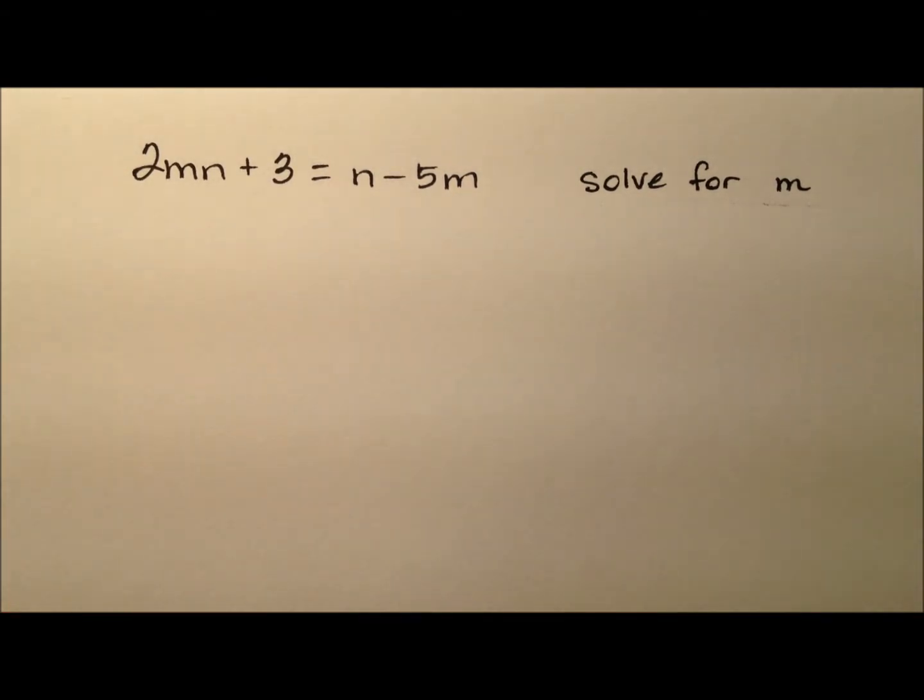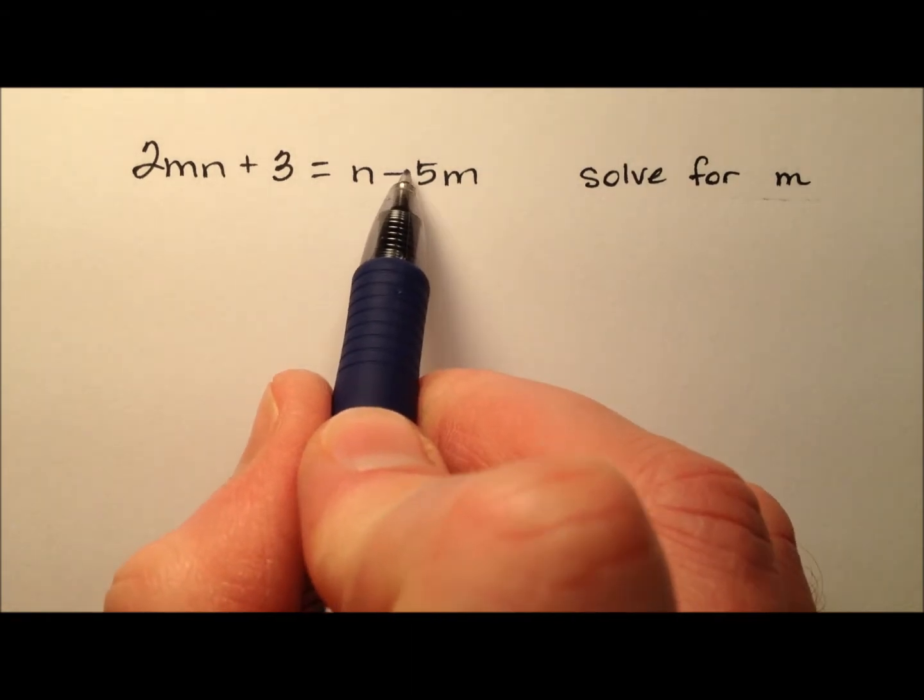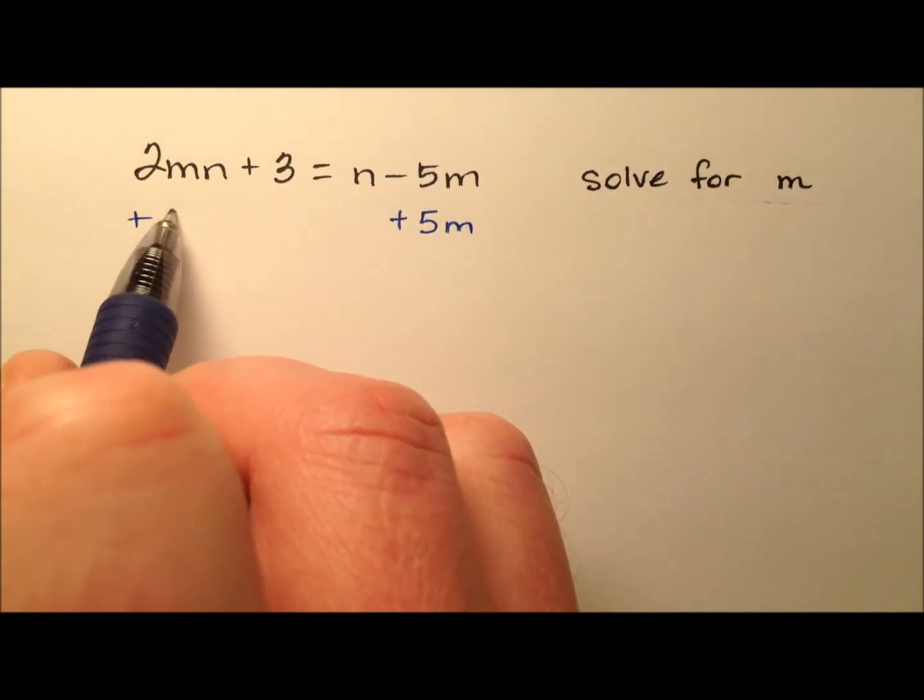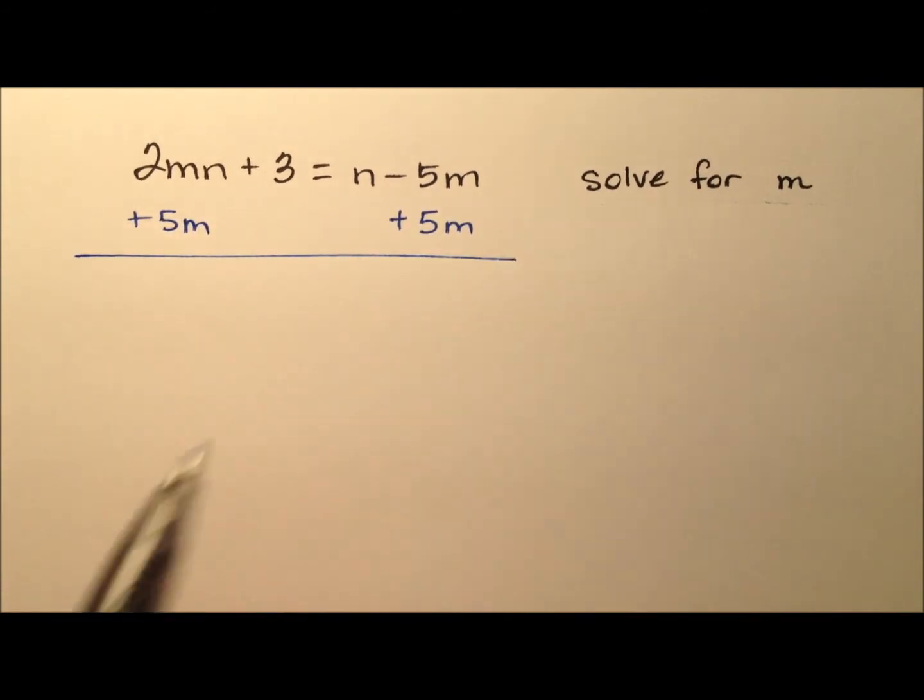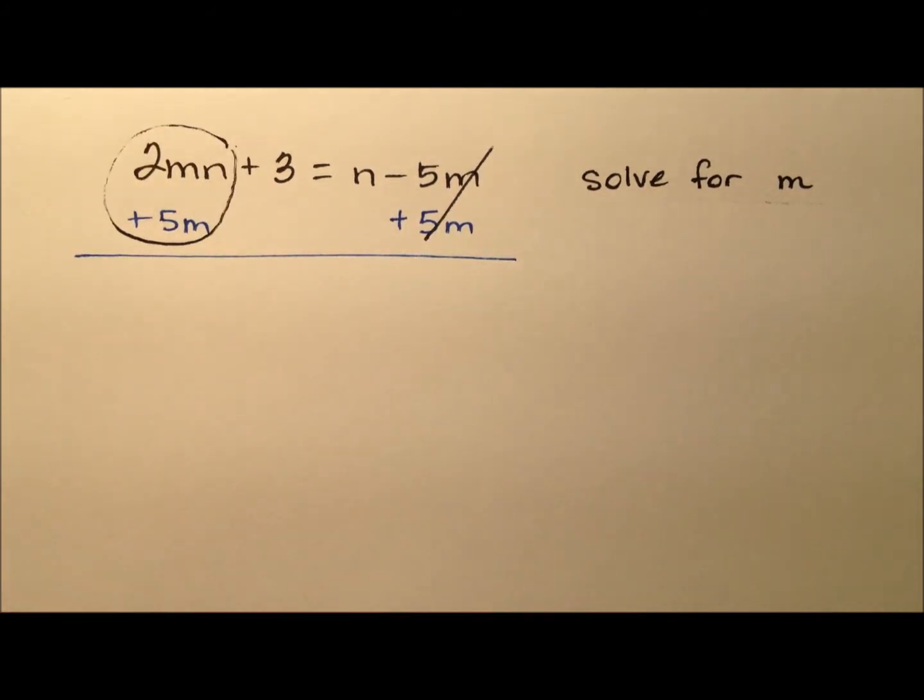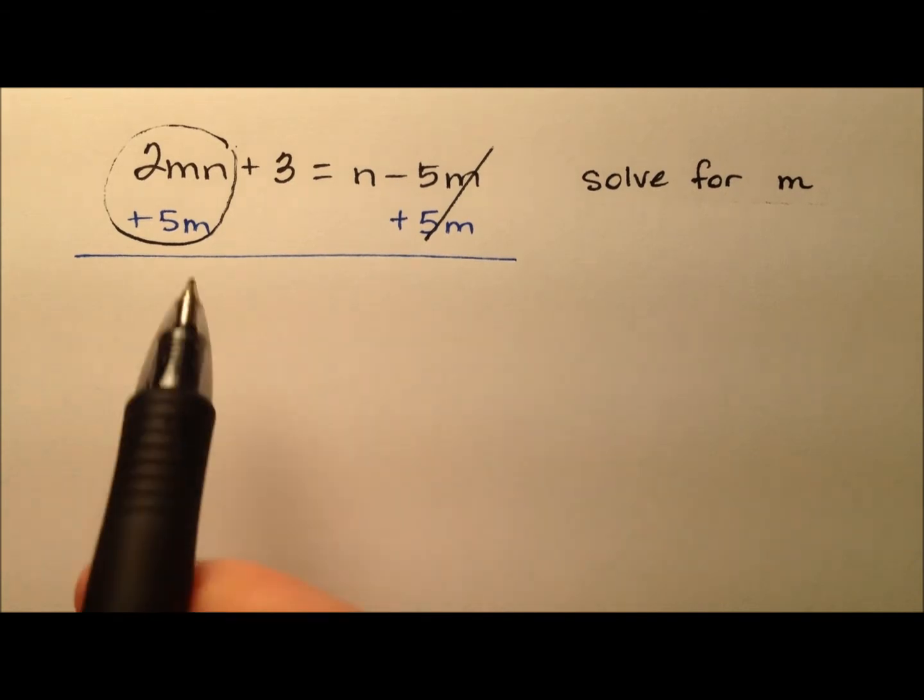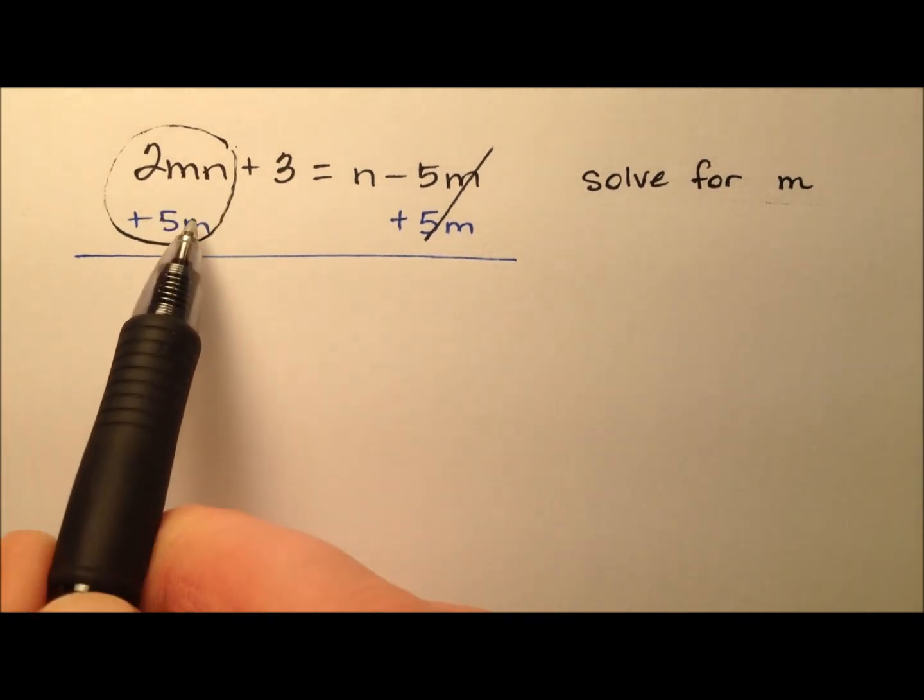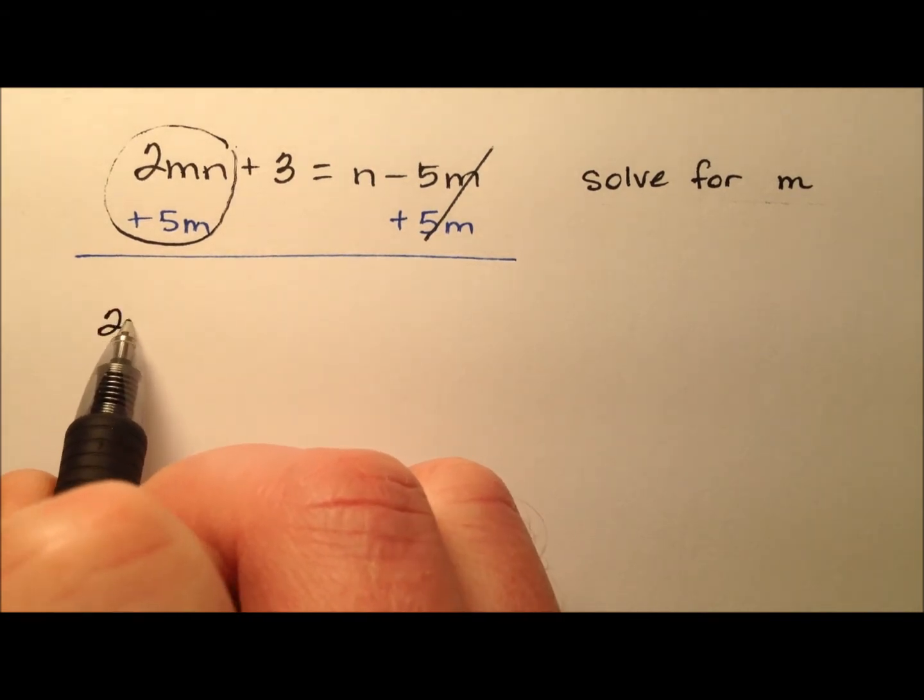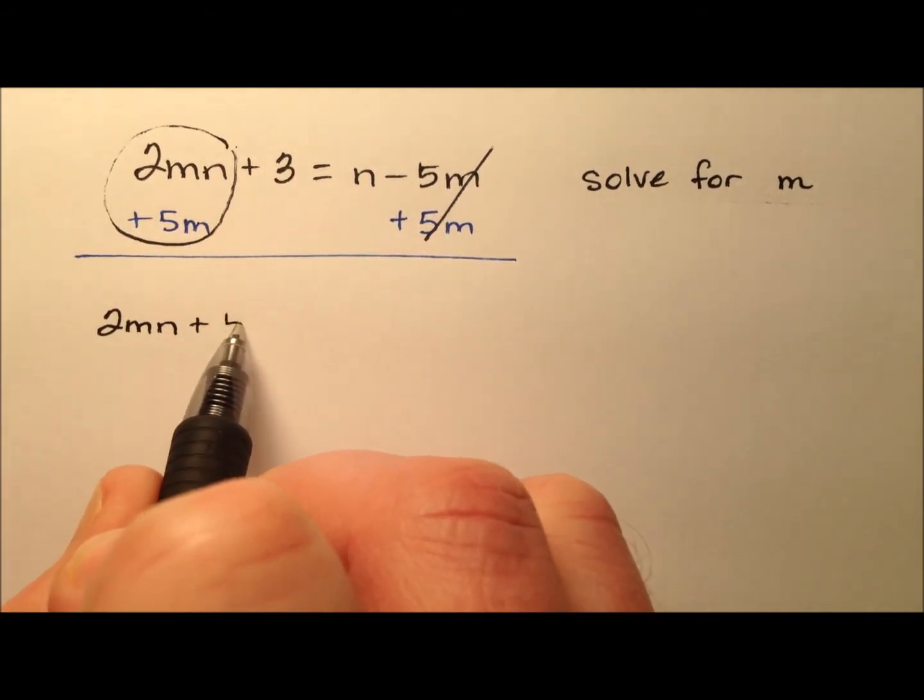So we can start by, well, we see this is subtracting 5m, so let's go ahead and add 5m. And when I do that, I see the 5ms on the right will cancel. And we have to be very careful here because these two terms are not like terms. This one has an m and an n, and this one just has an m. So since we can't combine them, we just need to put them side by side.